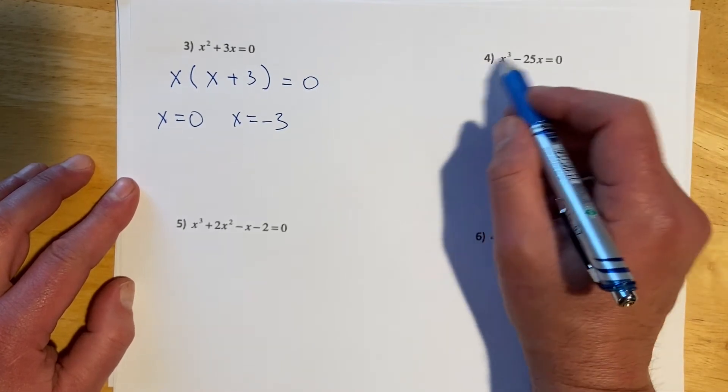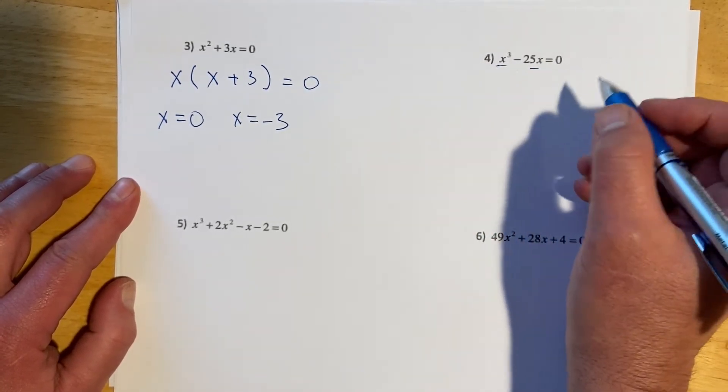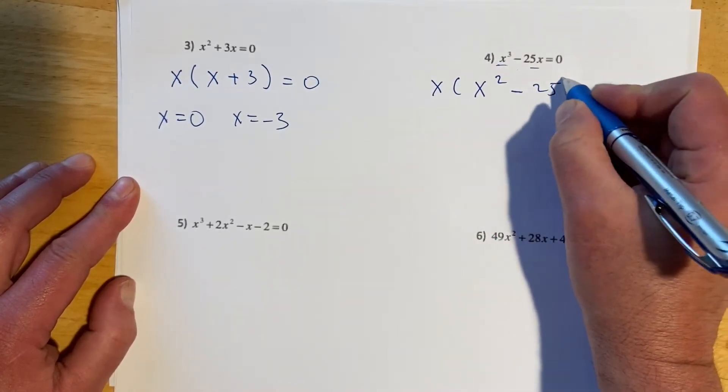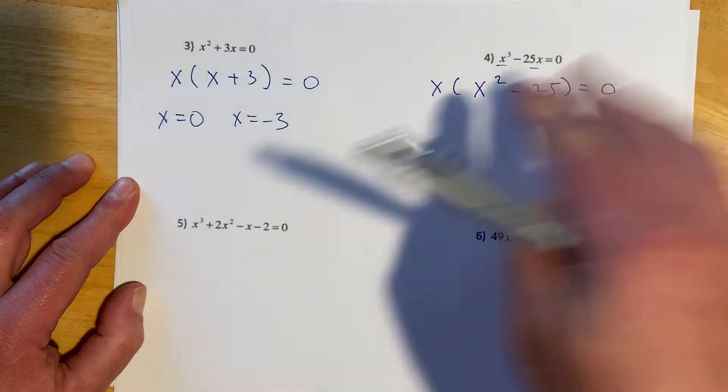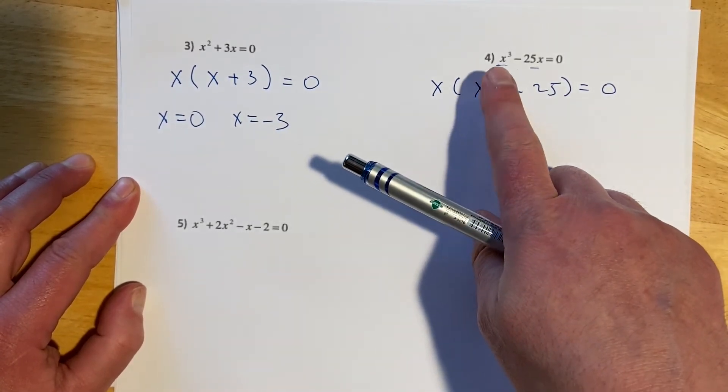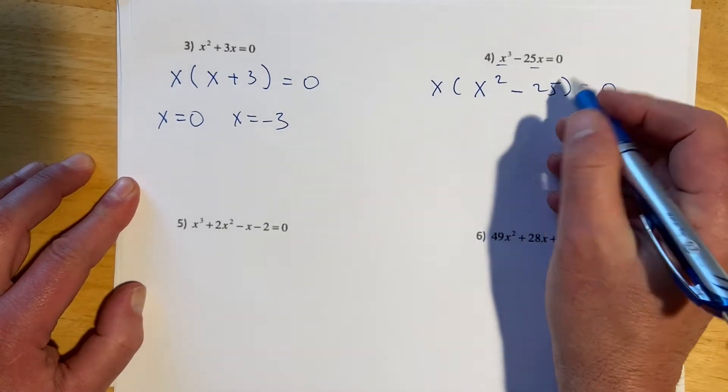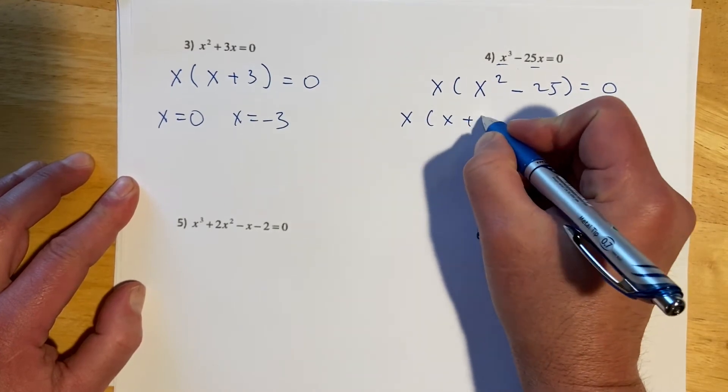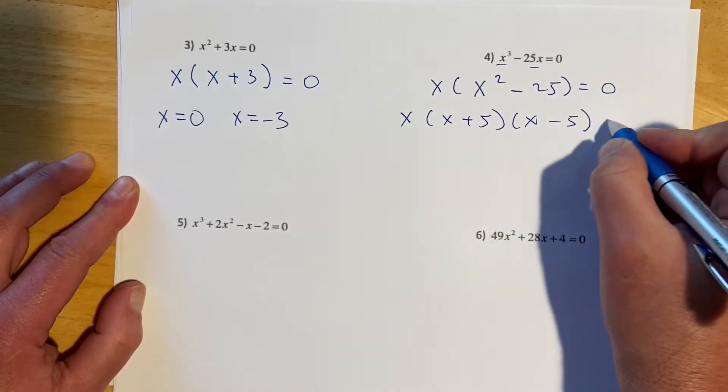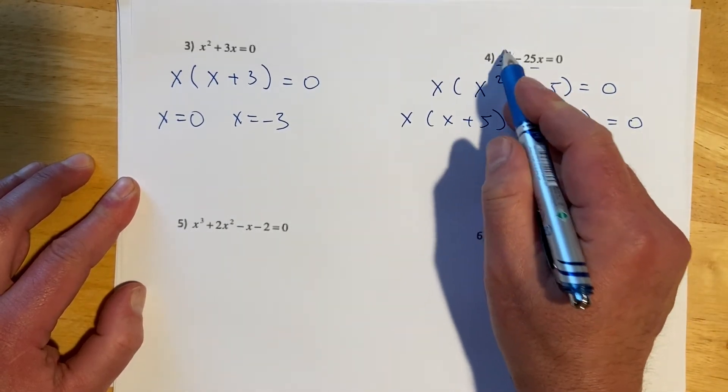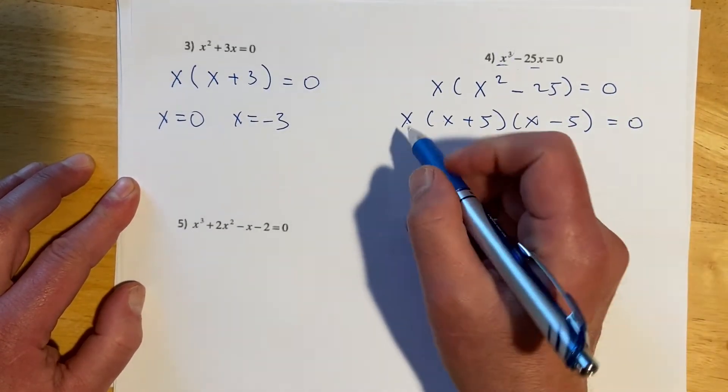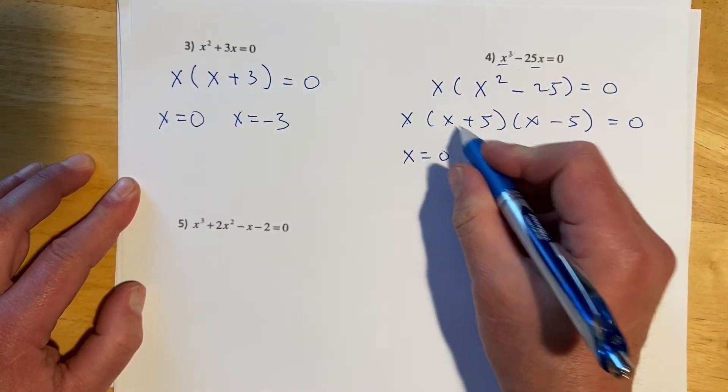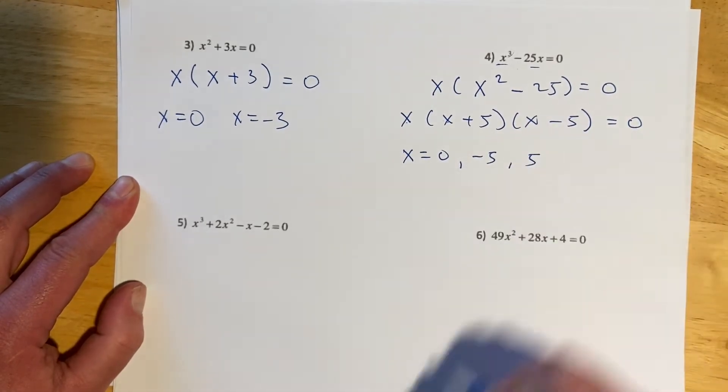This next one also has two terms, but there's that common factor again of x, so let's get that out of the way, so x, and then I'll leave x² - 25 = 0. And this one, hopefully, you remember, is our difference of two squares, so a² - b², we get (a + b)(a - b). So this would be x(x + 5)(x - 5). And so then we started off with a cube, and I have 1, 2, 3 x's, so I'm going to have three answers. So we have x = 0 from that one, -5 for that one, and then positive 5 for that one.